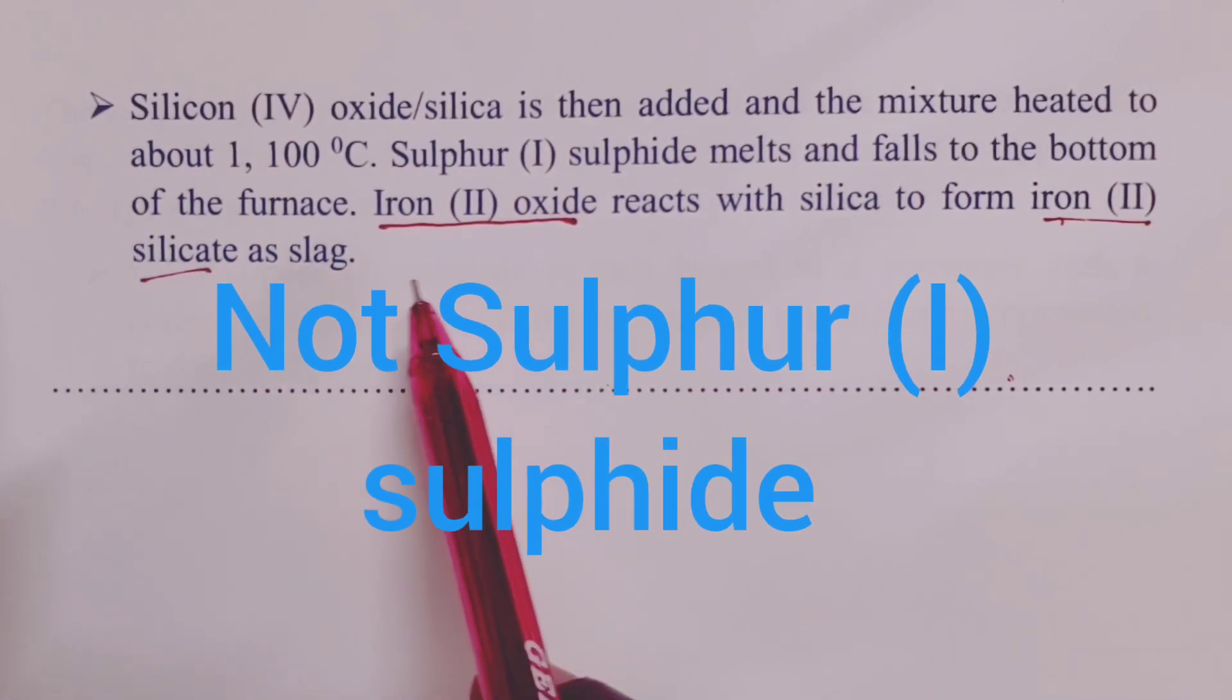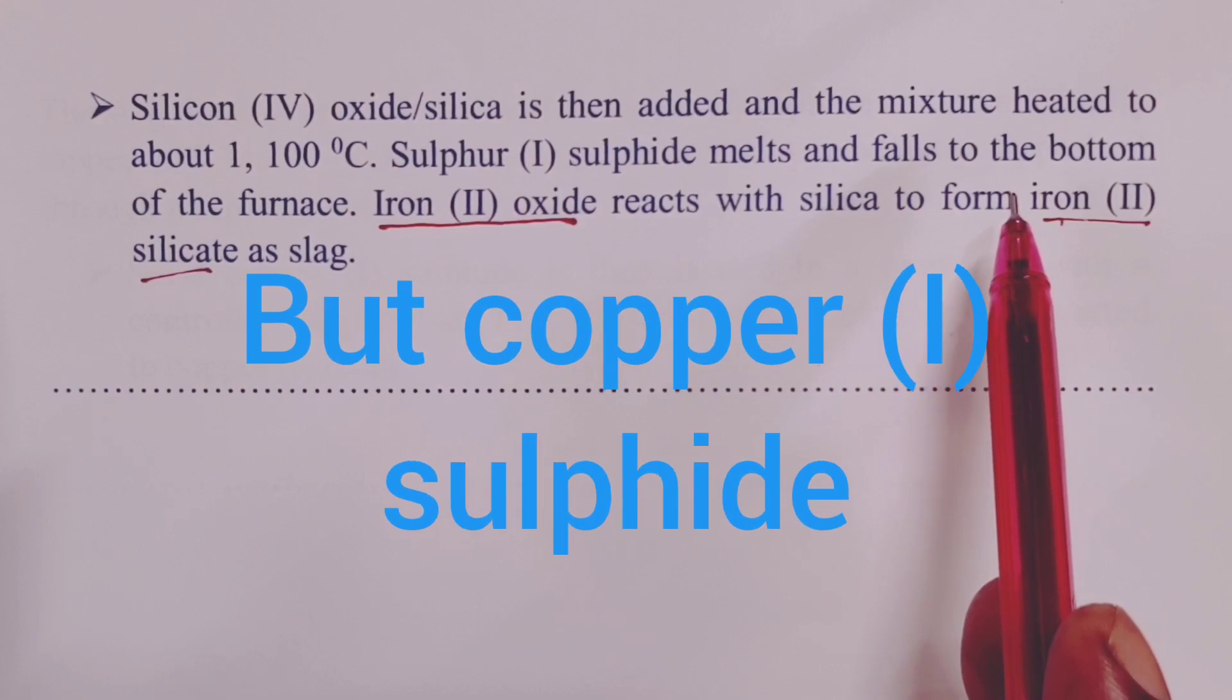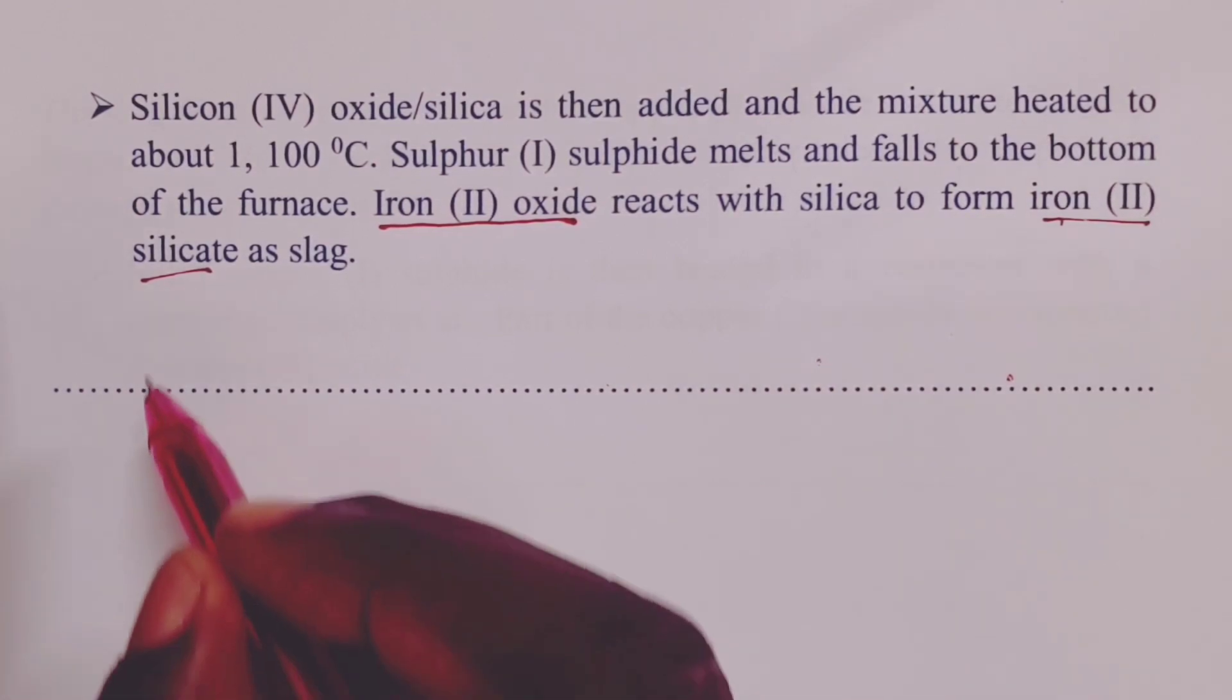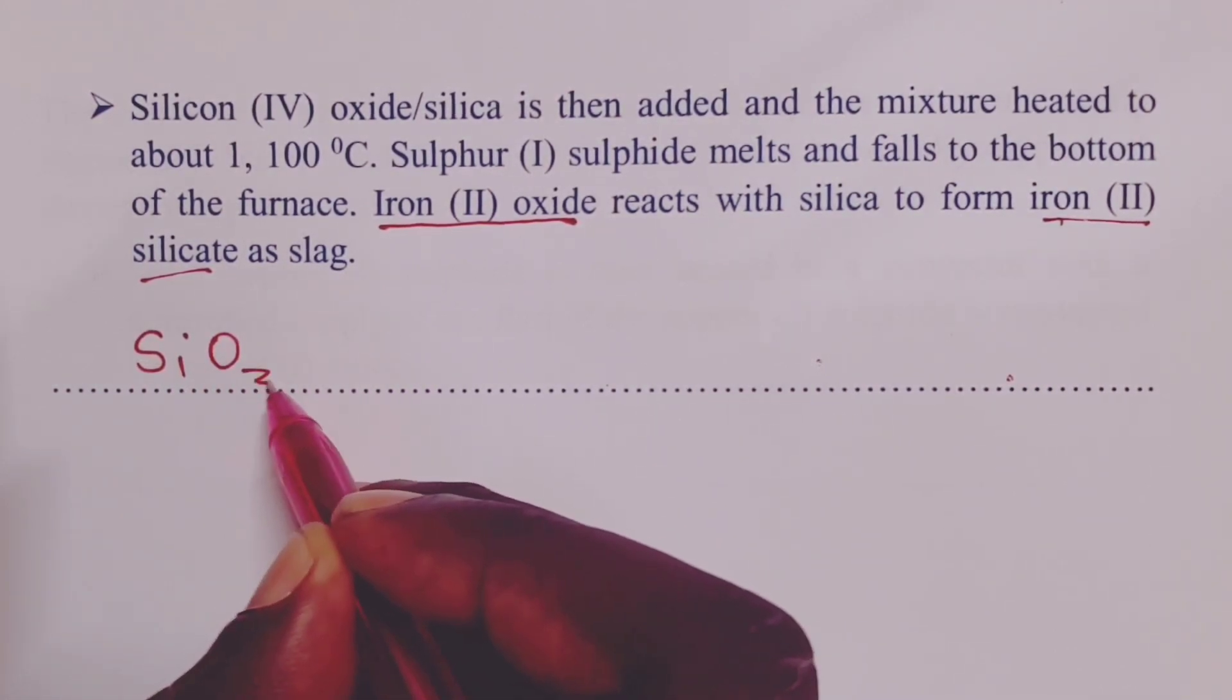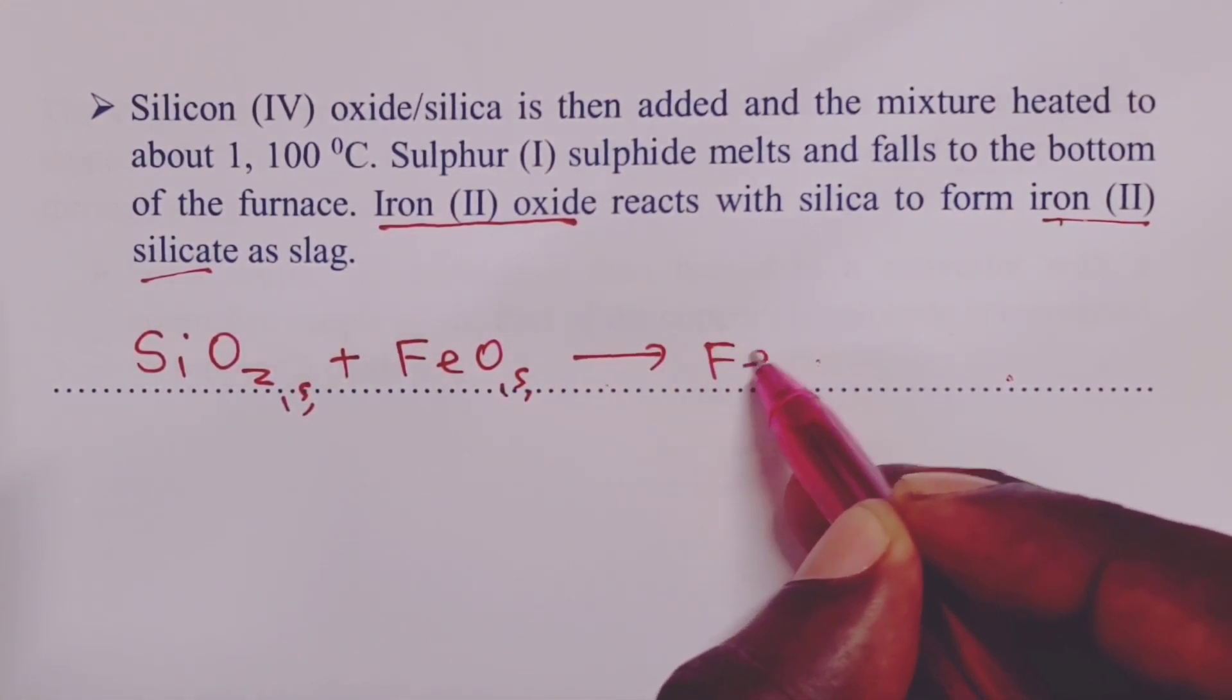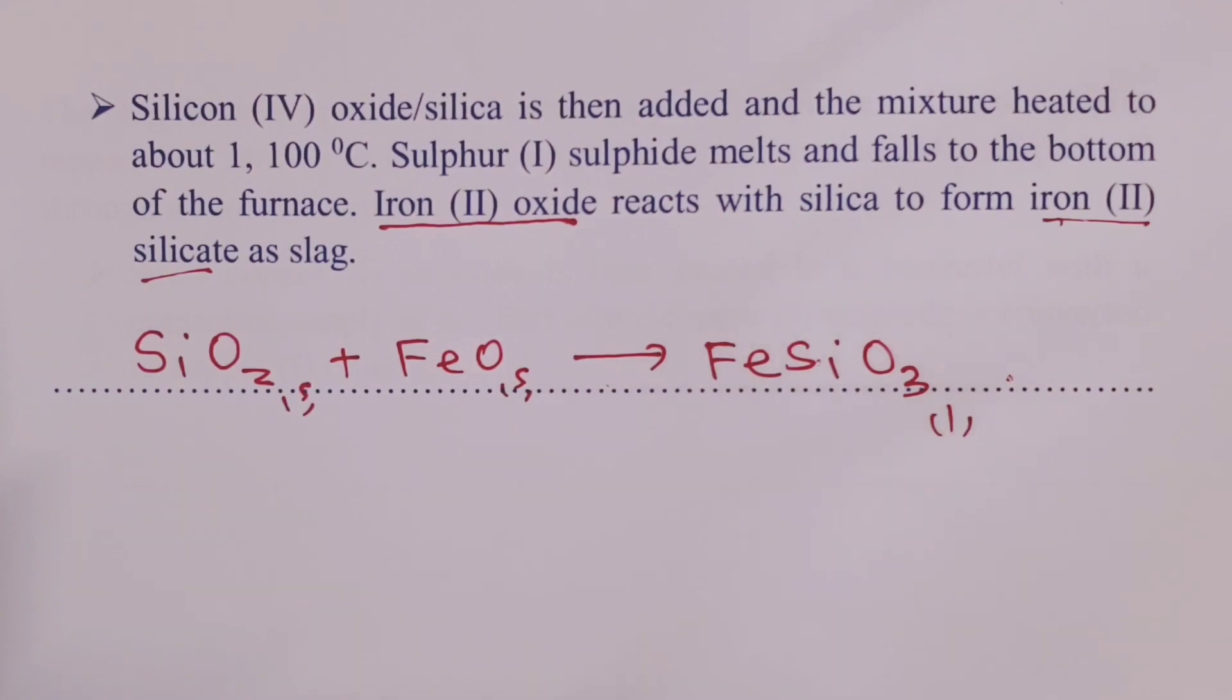What silica does is that it will react with iron-2-oxide to form iron-2-silicate as slag. The only substance that will remain here now is copper-1-sulfide, which we are saying is going to melt and fall to the bottom of the furnace from where we can tap it off periodically. When silica reacts with iron-2-oxide to form iron-2-silicate, we have an equation for the same, which will be silicon-4-oxide, which is a solid, reacting with iron-2-oxide, another solid, to form iron-2-silicate.